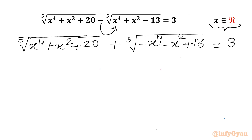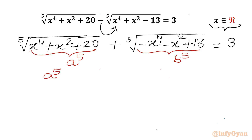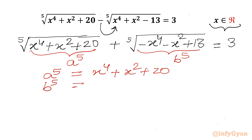Now we can use our substitutions. Let us say our first radicand equals a power 5, and the second radicand equals b power 5. So a⁵ = x⁴ + x² + 20, and b⁵ = −x⁴ − x² + 13.